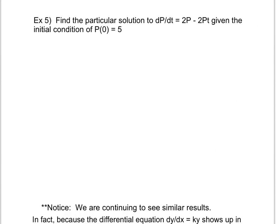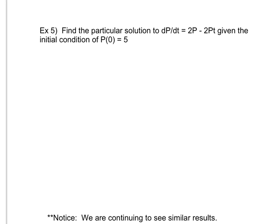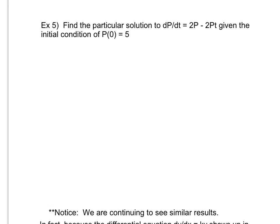Now suppose I'm asked to find the particular solution to dp/dt equals 2p minus 2pt, given the initial condition p(0) equals 5. Just like at the beginning, I first have to find the general solution. I can factor out p, since I want to get p's on one side and t's on the other: dp/dt equals p times (2 minus 2t). Then I divide by p and multiply by dt, giving (1 over 2p) dp.